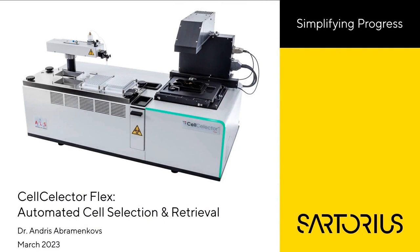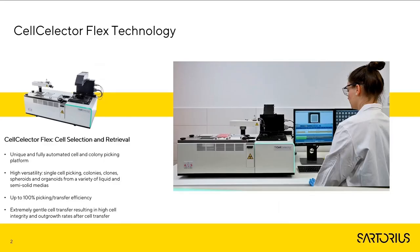My name is Andrus Abramenkos and I am product manager responsible for Cell Selector Flex technology. Today, in the first part of my talk, we will discuss the major features of the Cell Selector Flex platform and then move to discuss the single-cell picking process and applications. So what is Cell Selector Flex? It is a fully automated system that can isolate cells and colonies from various settings. We can pick adherent and non-adherent single cells, clones, and colonies, as well as larger structures such as spheroids and organoids from a variety of different media.